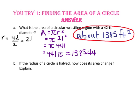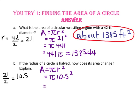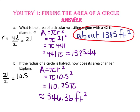For part B, if the radius of the circle is halved, how does its area change? We divide 21 by 2 to get 10.5. Using the formula πr², with 10.5 as the radius: 10.5 squared is 110.25, so we have 110.25π, which is approximately 346.36 square feet. This new area is approximately one-fourth the original area, because halving the radius and then squaring gives one-half squared, or one-fourth.